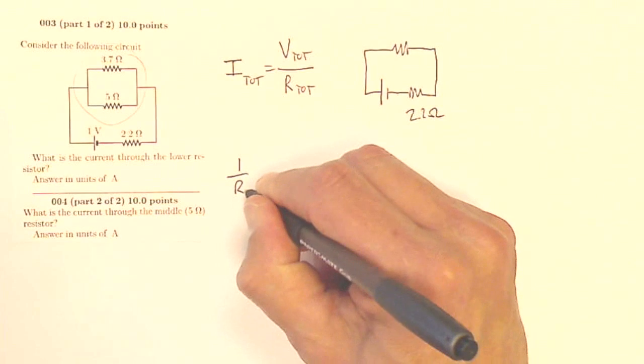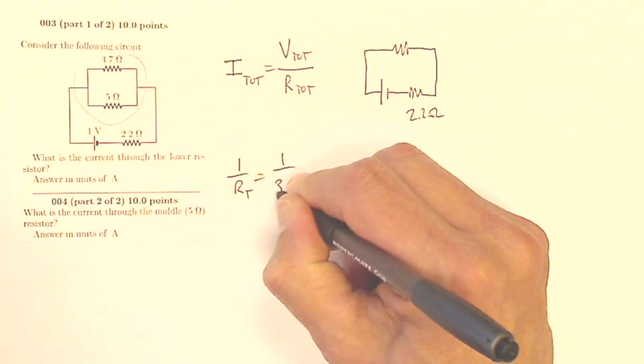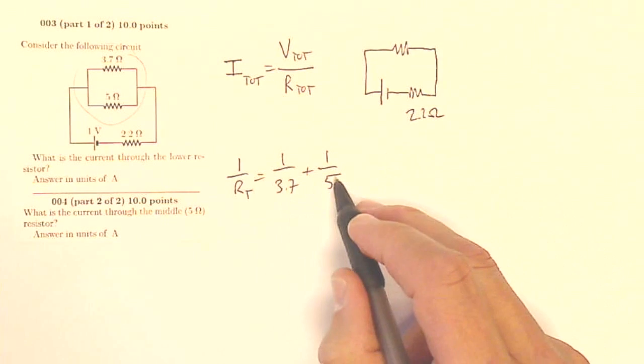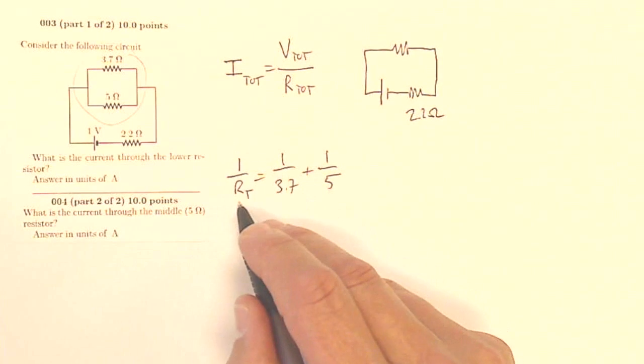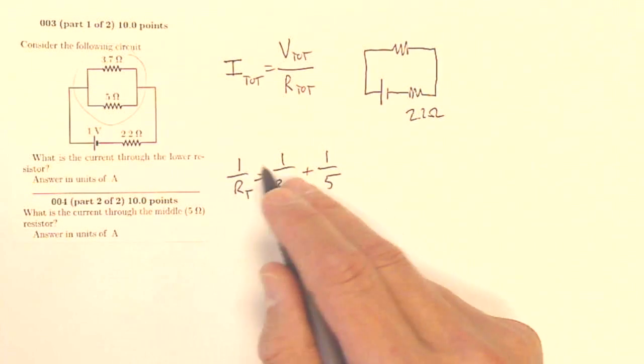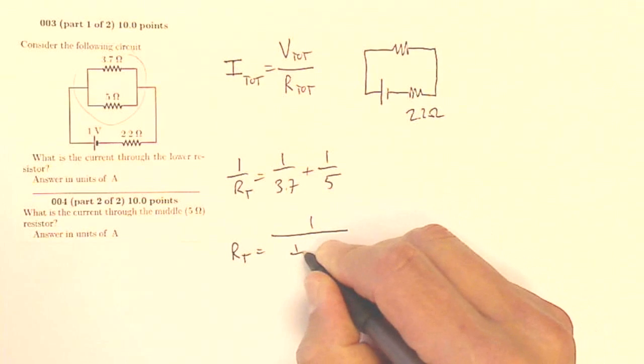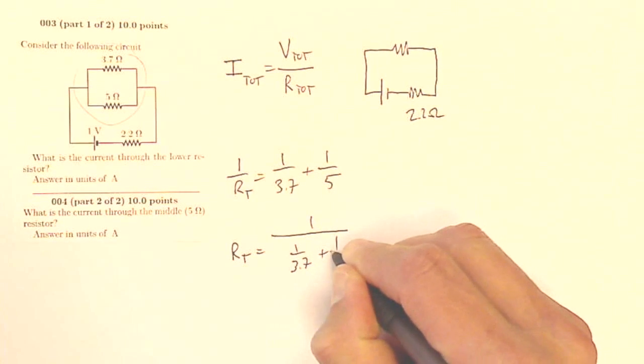But this one up top is going to be the combination of these two. So I know that 1 over R total equals 1 over 3.7 plus 1 over 5. Now don't just do this and think you have your answer. You have to inverse the answer to get the total. So another way of writing this would be that R total equals 1 over 1 over 3.7 plus 1 over 5.